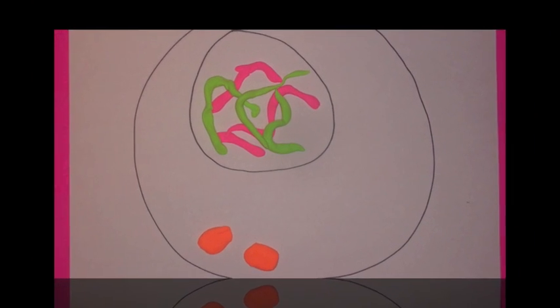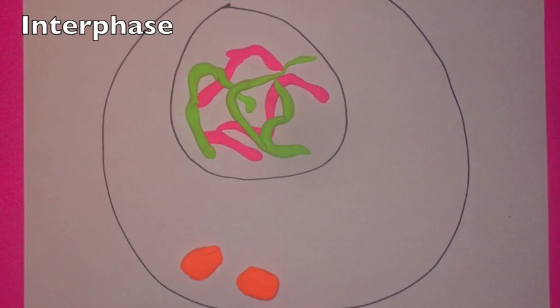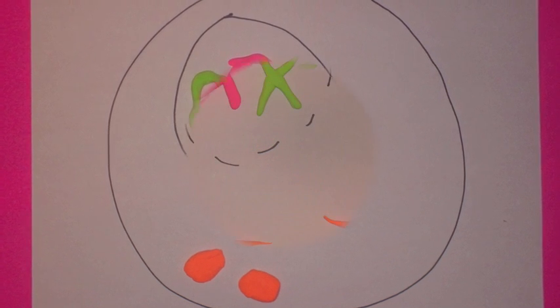The three stages are G1, S, and G2. The S phase is the period during which DNA is synthesized.